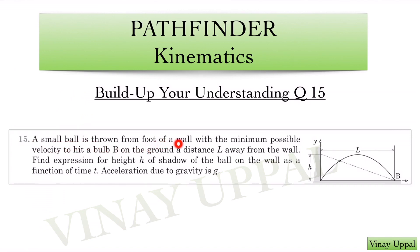A small ball is thrown from foot of a wall with the minimum possible velocity to hit a bulb on the ground a distance l away from the wall. I have a ball here and it is thrown from the ground with the minimum possible velocity to hit this bulb.